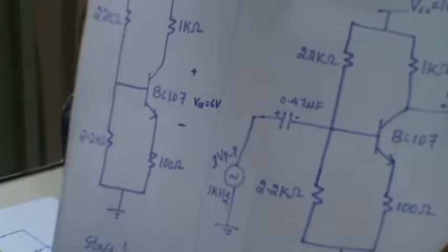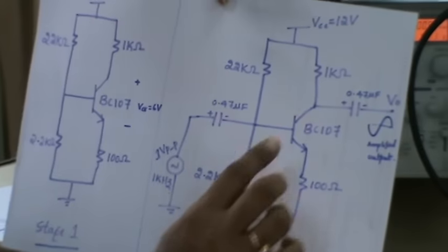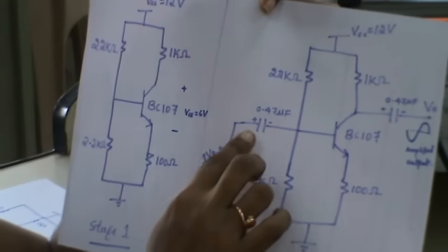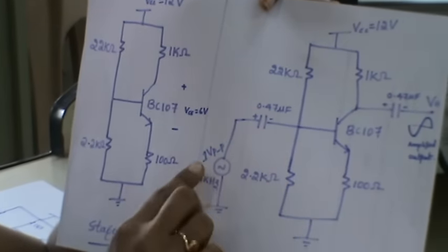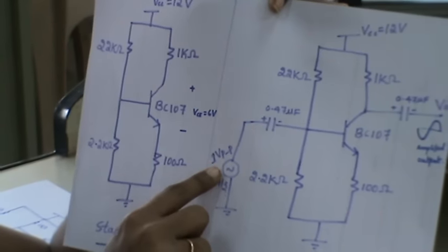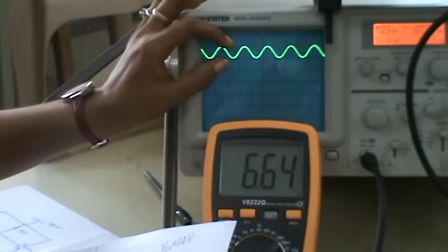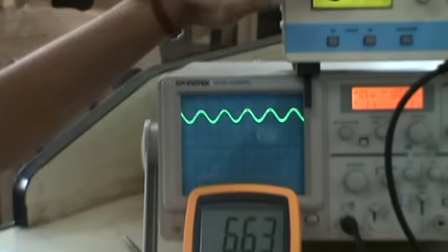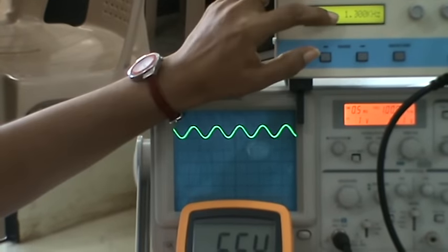Next, whether it is amplified, is by connecting the coupling capacitors 0.47 and 0.47, and the input is given as 1 volt peak to peak with 1 kilohertz. Here we can see the input is given as 1 kilohertz with 1 volt peak to peak.